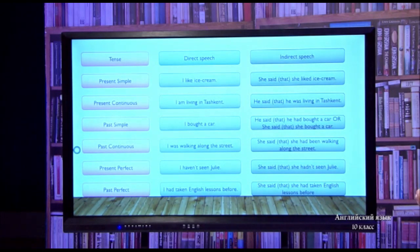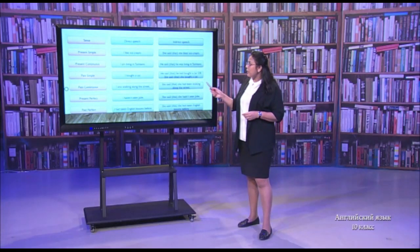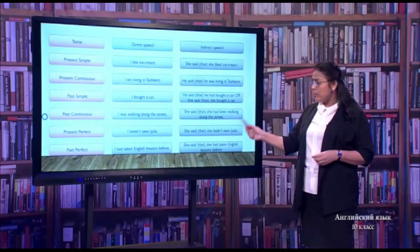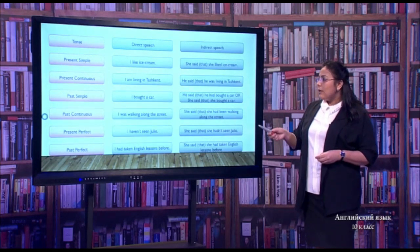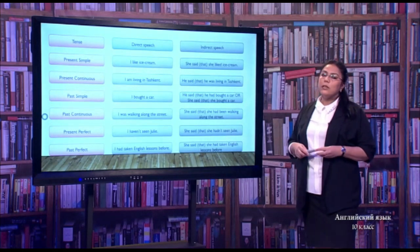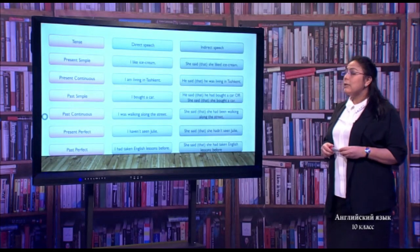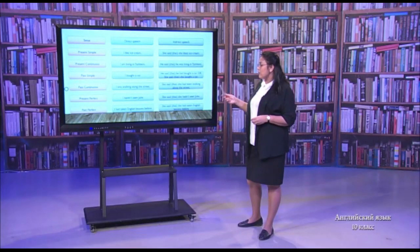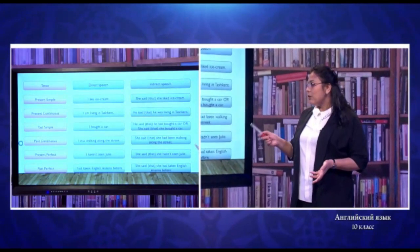Third, past simple: 'I bought a car.' If the reporting verb is in the past, while changing from past simple, we make the tense into past perfect. It comes like this: 'He said he had bought a car.' Or 'She said she bought a car' — both past perfect and past simple can be used. Fourth, past continuous: 'I was walking along the street.' This sentence should change into past perfect continuous: 'She said she had been walking along the street.'